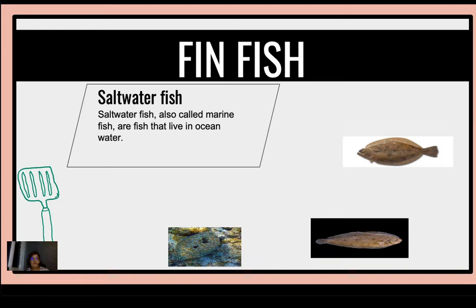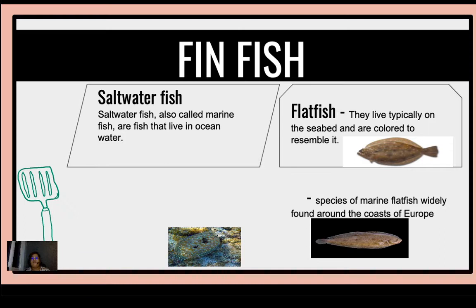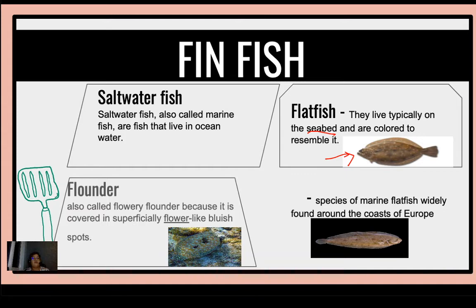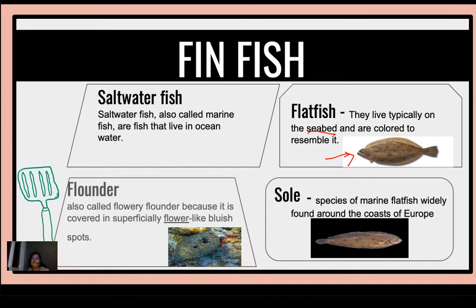Let's talk about finfish first. We have saltwater fish, also called marine fish. Of course, they are fish that live in ocean water. The first category is the flatfish. Flatfish typically rest on the seabed and are colored to resemble it — whatever is the color of the seabed, that will be the color of the fish. We have the flounder, called flowery flounder because it is covered by superficially flower-like bluish spots, and their home is similar in color to the spots they have. Then we have the sole, which are species of marine flatfish widely found around the coast of Europe. So basically, saltwater flatfish have a flat body structure.